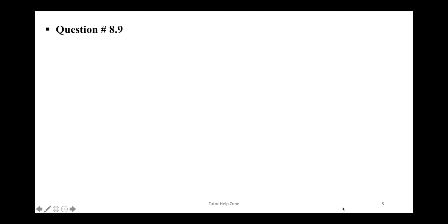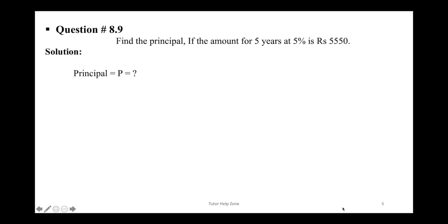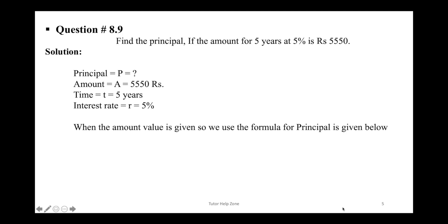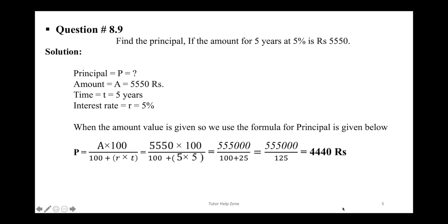Next question 8.9. Find the principal if the amount after 5 years at 5% is Rs. 15,550. We need to find the principal P. The amount is given as Rs. 15,550, time is 5 years, and rate is 5%. When the amount is given, we use the formula: P = A × 100 ÷ (100 + R × T). Put in the values and solve to get your answer.